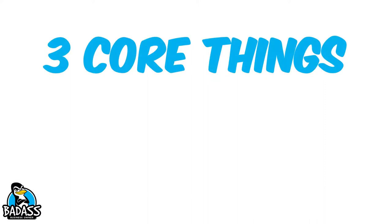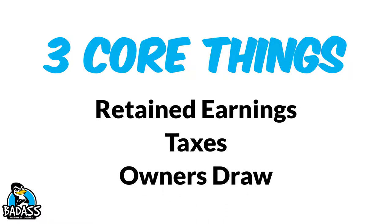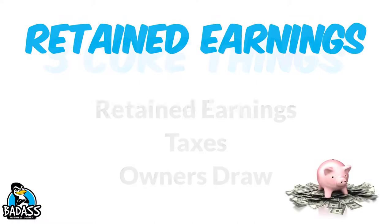The first thing you have to understand is there are three core things that your business profits go towards. One is retained earnings, one is taxes, and the third one is the money that you take as a business owner for the owner's draw. You don't get all of that money at the bottom of the profits, because you have three things that you need to make sure you are taking care of.